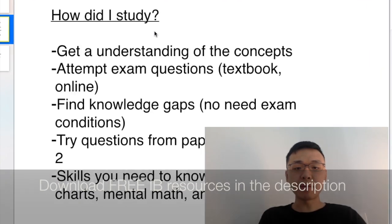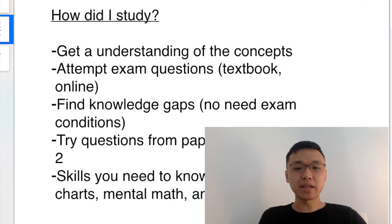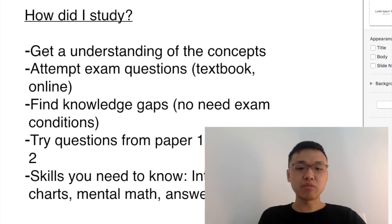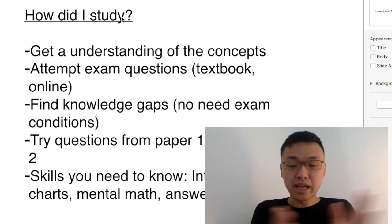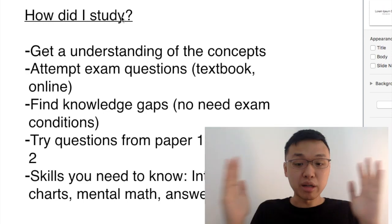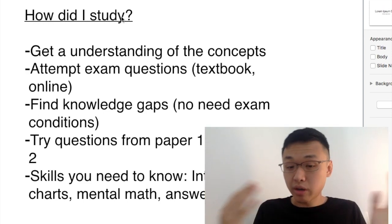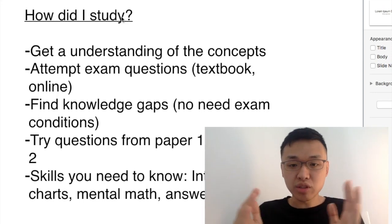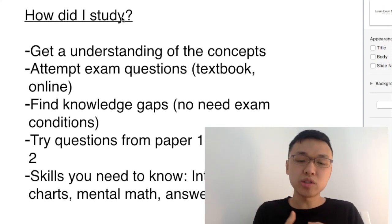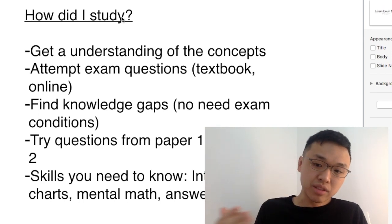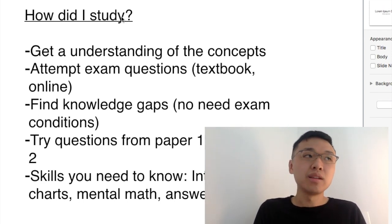For IB chemistry, I would definitely recommend getting a tutor for this subject. The reason is because a tutor can really save a lot of your time. Because there are 6 subjects in IB, if you want to do well, you need to do very well in all of the subjects, and each subject requires a lot of time. If you have a tutor, you can save your time dramatically. I would say the tutor that I had for chemistry saved about 60 to 70% of my time. So before I might need to use 100 hours, now only 30 to 40 hours. The tutor really helped that much.